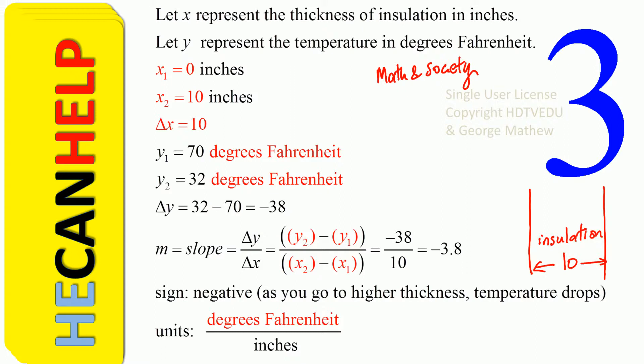On one side, we have 70 degrees Fahrenheit. On the other side, we have 32 degrees Fahrenheit. Let's assume this is our origin. Let x represent the thickness of insulation in inches. Let y represent the temperature in degrees Fahrenheit.